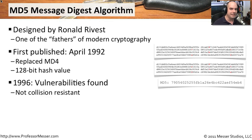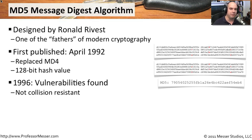In 1996, however, there was a discovery of a number of collisions found with MD5. One of the biggest challenges hash algorithms have is ensuring that two separate pieces of information can't end up creating the exact same hash. That's called a collision, and in the world of hashing, that's a bad idea.